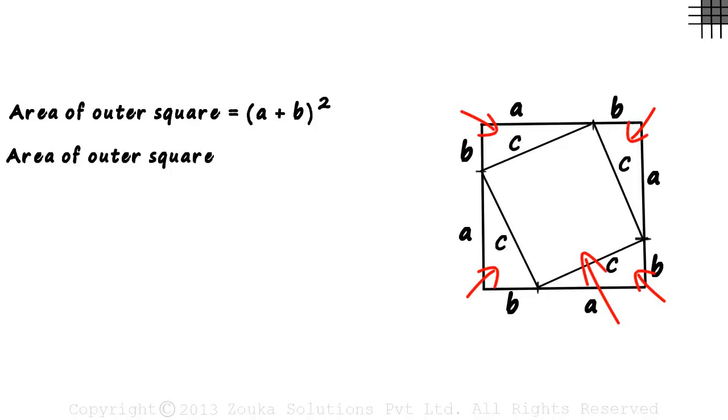Let's zoom out a bit and try to find the area of the outer square. The area of the square can be calculated in two ways. The first way is side multiplied by side. It can be written as A plus B multiplied by A plus B which equals A plus B the whole squared. And the area of the outer square also equals the sum of the areas of these five parts.